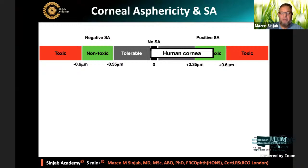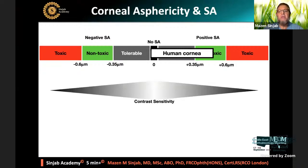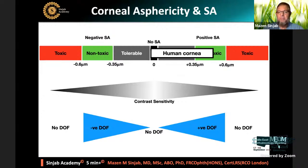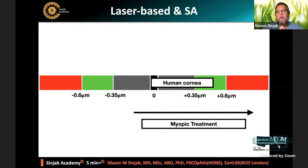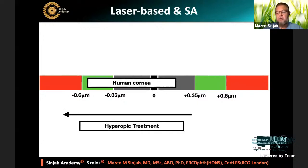There is a correlation between spherical aberration and quality of vision: the more the spherical aberration, the less the quality of vision or lower the contrast sensitivity. There is also a correlation between spherical aberration and depth of focus: the more the spherical aberration, the more the depth of focus, meaning the patient can see near objects better. Our human cornea has positive spherical aberration ranging between 0 to approximately 0.55 microns plus. Laser-based refractive surgery affects corneal spherical aberration: myopic treatment makes it more positive, while hyperopic treatment pushes it towards the negative.